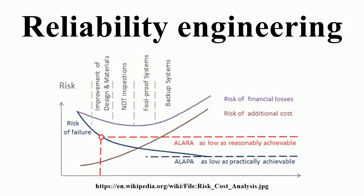Improving maintainability is generally easier than improving reliability, and maintainability estimates are also generally more accurate. However, because the uncertainties in reliability estimates are in most cases very large, they are likely to dominate the availability calculation even when maintainability levels are very high. When reliability is not under control, more complicated issues may arise — like manpower shortages, spare part availability, logistic delays, lack of repair facilities, extensive retrofit, and complex configuration management costs. The problem of unreliability may be increased also due to the domino effect of maintenance-induced failures after repairs. Focusing only on maintainability is therefore not enough. If failures are prevented, none of the other issues are of any importance, and therefore reliability is generally regarded as the most important part of availability.